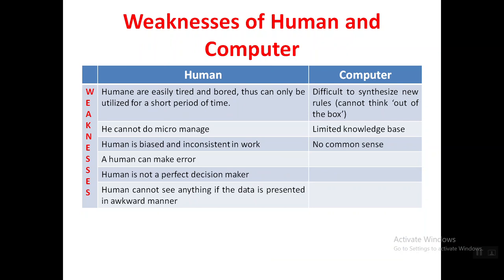The weaknesses of computers: computers find it very difficult to synthesize new rules — they cannot think out of the box. Whatever training data is available, the computer works within that data only and cannot go outside it. Computers have a very limited database compared to human beings, and they don't have common sense, which means sometimes computers may even harm human beings. These are the main differences between human and computer under two headings: strengths and weaknesses.